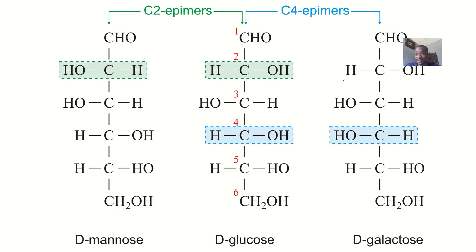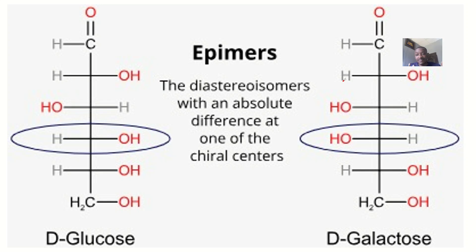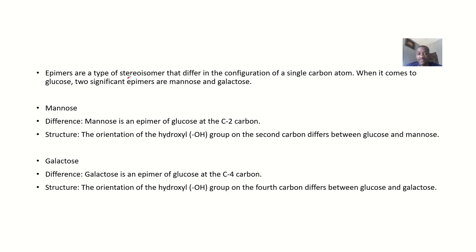Let's talk about the importance of these epimers to the human body. First, let's use this diagram to define what is an epimer. An epimer is actually a diastereoisomer. When it says isomer, something has been rearranged. If glucose is having the OH on this side, galactose has the OH twisted to the other side. There's a difference at just one of the chiral centers. Epimers are a type of stereoisomer that differs in the configuration of a single carbon atom.